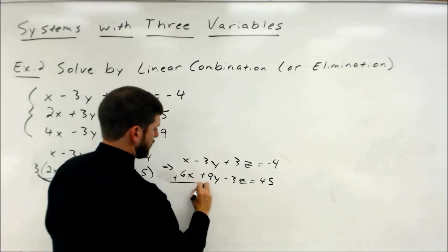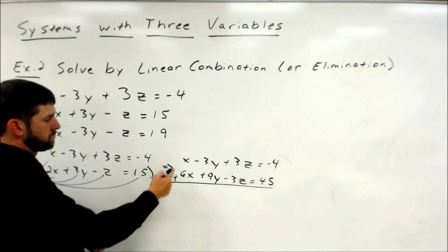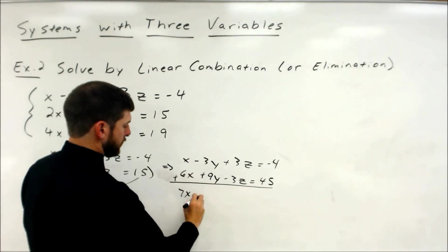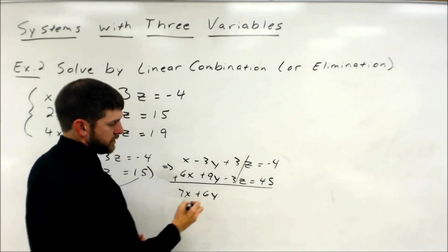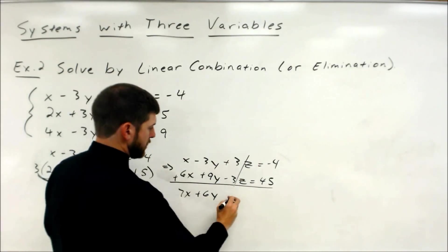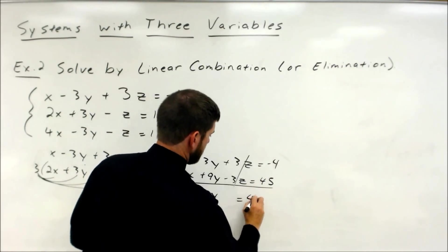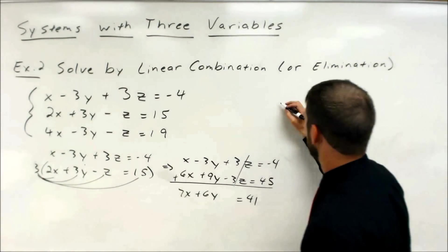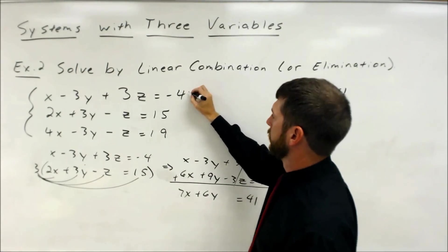From there we do our combination step. x and 6x gives 7x. Negative 3y and 9y is positive 6y. 3z and negative 3z cancel, giving zero z's. Negative 4 and 45 gives 41. So combining the first two equations together produces the equation 7x plus 6y equals 41.